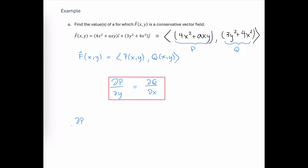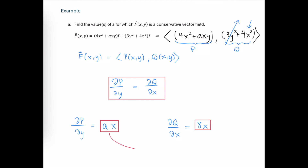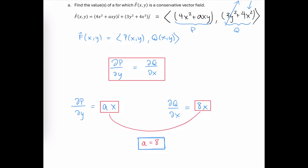Let's begin by calculating the first partial of P with respect to y. With respect to y, all of the x terms are constant, and we have essentially a constant multiple of y, so that first partial is just ax. The first partial of Q with respect to x treats the y part as a constant, and the derivative of 4x squared with respect to x is 8x. Setting these two first partials equal to each other, we get a conservative vector field when a equals 8.